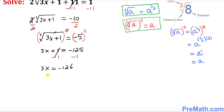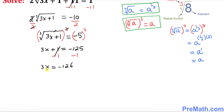Now we're going to divide both sides by 3. Once you divide both sides by 3, x turns out to be equal to negative 42.